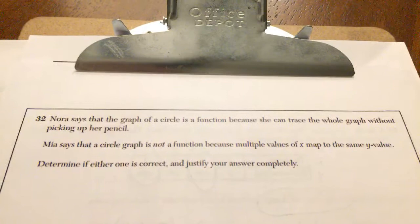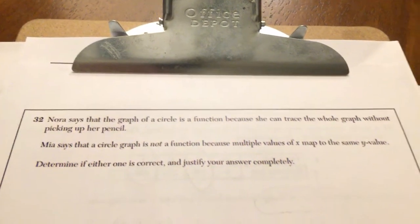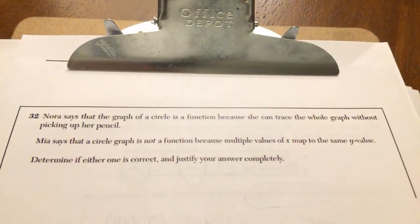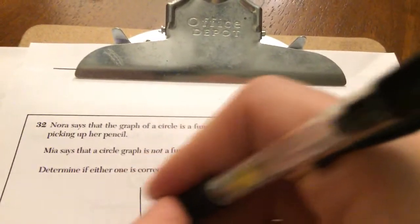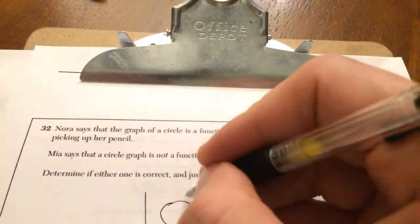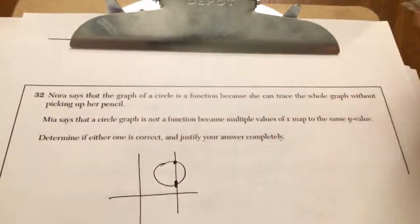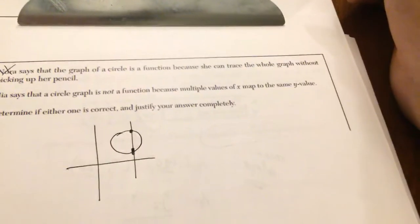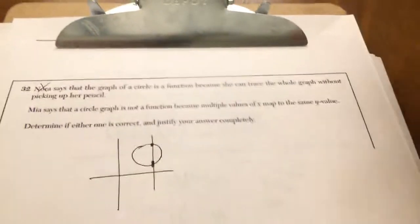Nora says the graph of a circle is a function because she can trace the whole graph. Mia says that a circle is not a function because multiple values of X map to the same Y. Determine if either one is correct. Well, if you have a circle, it fails the vertical line test, which means it's not a function. So Nora is not correct.